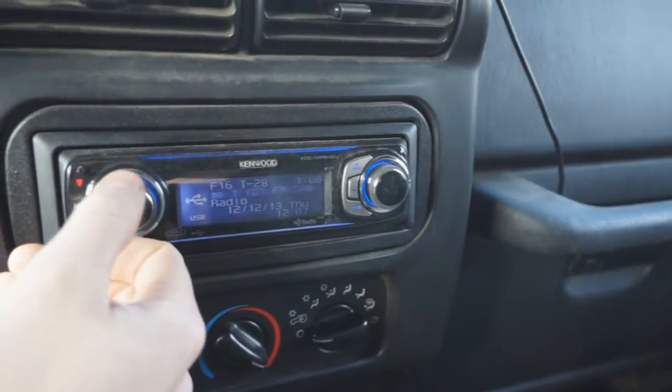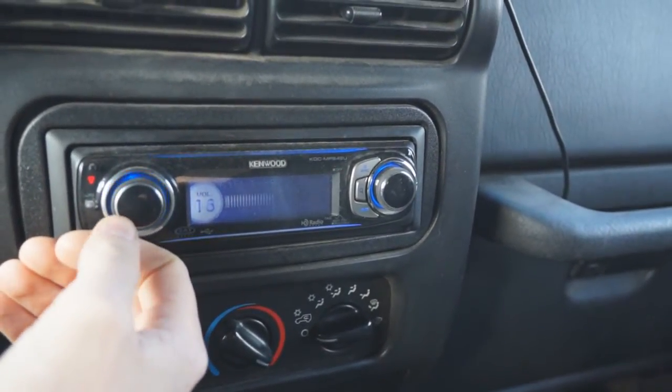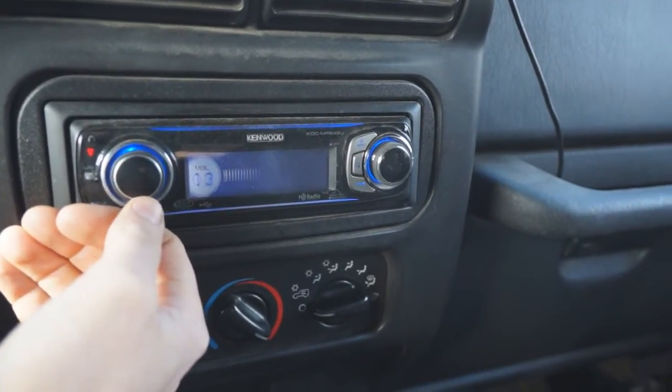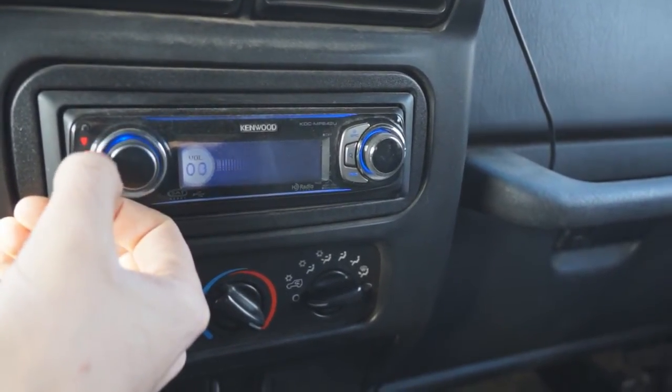There's also a rotary encoder in the volume knob of the stereo. It has to determine both the speed you're spinning it and the direction in order to adjust the volume electronically.